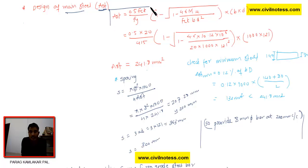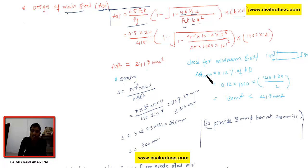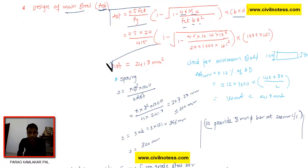Let's start with the design of the main steel. The formula for AST is: AST = 0.5 × (Fck / Fy) × [1 − √(1 − 4.6 × Mu / (Fck × B × D))] × B × D. After putting in all the values, you get the AST. This AST is then used for spacing calculation as well.